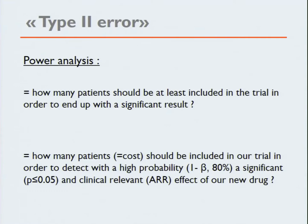The power analysis calculates how many patients should be included in the trial in order to end up with a significant result. For the pharmaceutical industry, the key point is: how many patients should be included to detect, with a high probability — most often set at 80% — a significant and relevant effect of a new drug? If the pharmaceutical industry can make their point with two times 200 patients, why should they include two times 30,000? It will cost too much. So they calculate how many patients they need to find the difference at the 80% power level.